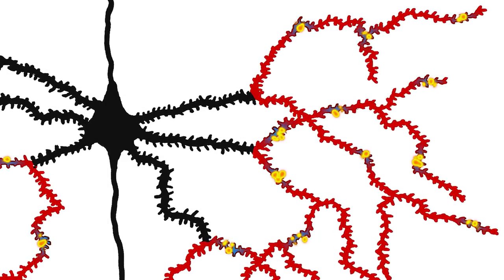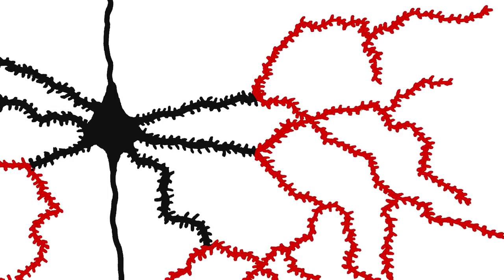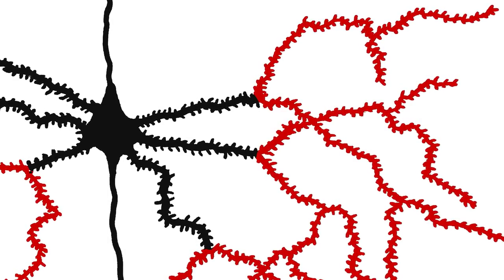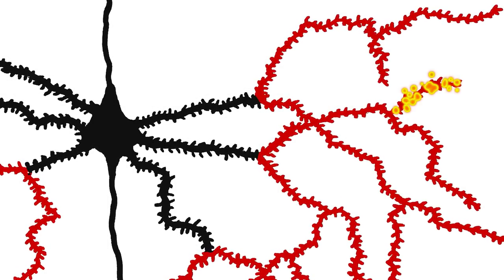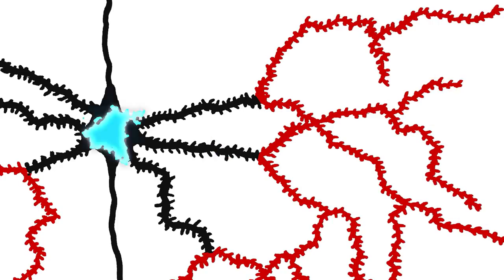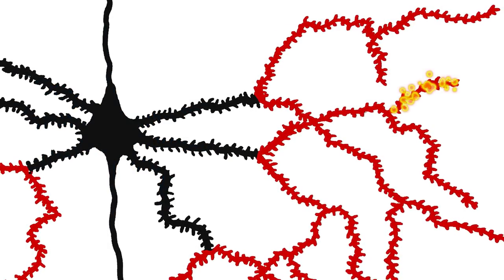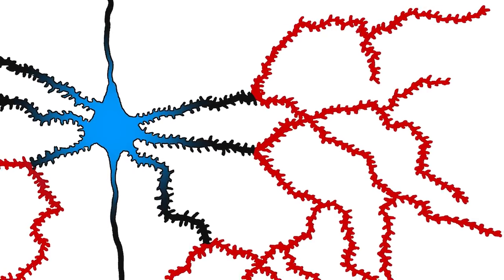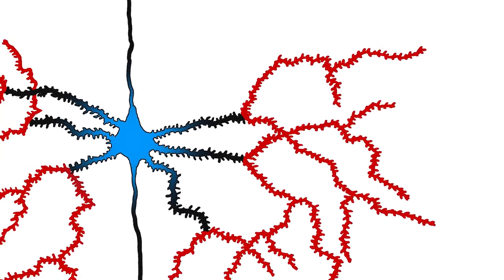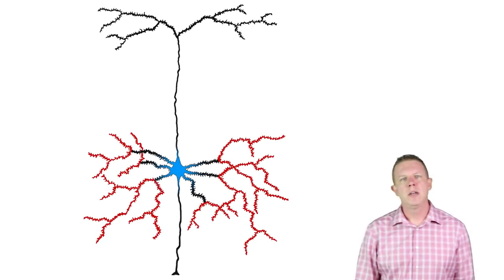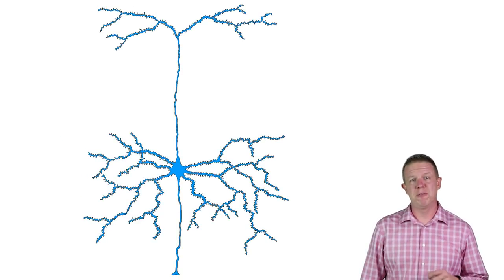But we now know these synapses cause dendritic spikes. Much like an action potential, if a local distal segment receives enough synaptic activity, it can cause a high voltage pulse to travel down the dendrite to the cell body. This is not powerful enough to cause an action potential, but the voltage increase at the cell body has a lasting effect. The cell is now primed to fire.